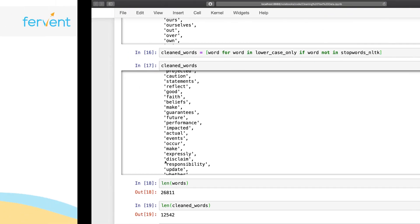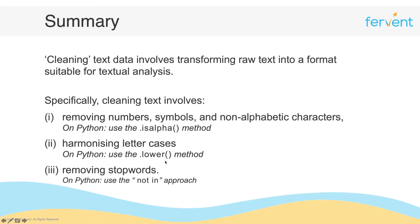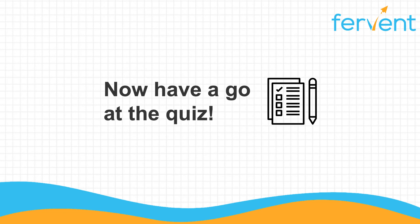Hopefully all of this makes sense. In summary, we learned that cleaning text involves transforming raw text into a format suitable for textual analysis. We learned that we can remove all numbers, symbols, and non-alphabetic characters using the .isalpha() method. We saw that we can harmonize letter cases across all words using the .lower() method. And finally, we saw that we can remove stop words — the most common words in the English language — by simply using the 'not in' approach. If any part of this video is not quite clear, please watch it again before moving on. Have a go at the quiz, and I'll see you in the next video.